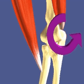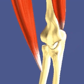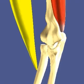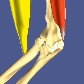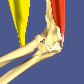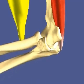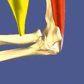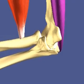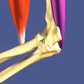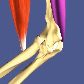This insertion location results in extension torque and motion. When two muscles act at the same joint and produce opposing torques and motion, they are called antagonists. The biceps brachii and triceps brachii are an example of an antagonistic muscle pair.